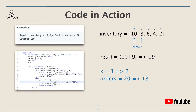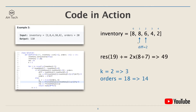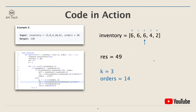We subtract the 2 transactions from orders, so orders becomes 18. After this transaction the inventory array updates accordingly and the current result is 19. Following the same process, we calculate the difference between the second and third element, which is also 2. Now we have 2 colors of balls that both have 8 balls. Since this condition still holds, we can sell these 2 colors of balls at the same time. The total value from this transaction is k times the arithmetic sum, and the result updates from 19 to 49. k becomes 3 and orders becomes 14.